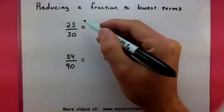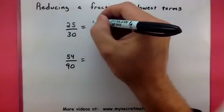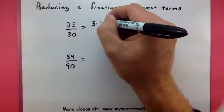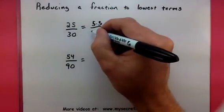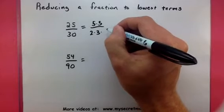Let's go ahead and look at this one. We have 25 over 30. If we look at the factors of 25, we get 5 times 5. And if we look at the factors of 30, we get 2 times 3 times 5.